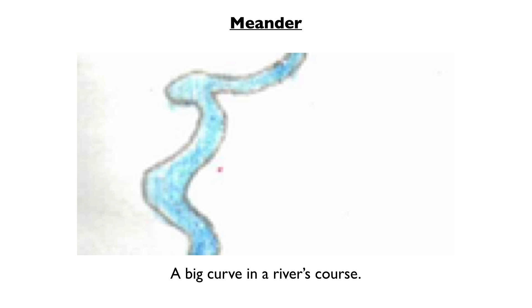Meander. All rivers meander along their course. You can see examples here of meanders in a river. It is a bend in the river's course.